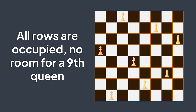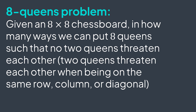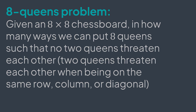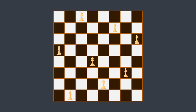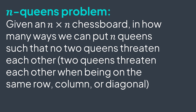But what about eight? Can we put eight queens on an eight-by-eight chessboard without any threat? If yes, in how many ways can we do so? That's what the eight queens problem is about: we have an eight-by-eight chessboard and we want to count the ways we can place eight queens such that no two queens are on the same row, column, or diagonal. We can even generalize to N — an N-by-N chessboard with N queens — giving us the N queens problem, which we will discuss today.